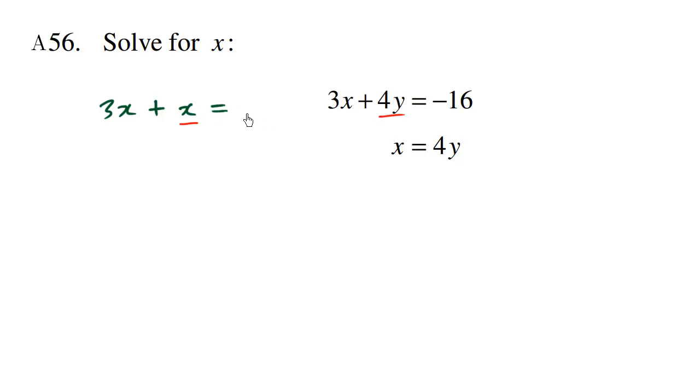So this equals negative 16. So we have 3x plus x, we have 4x equals negative 16. Divide both sides by 4, we end up with x. x equals negative 16 divided by 4, which is negative 4.